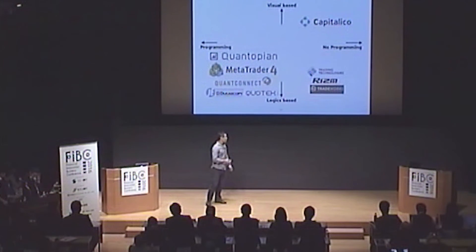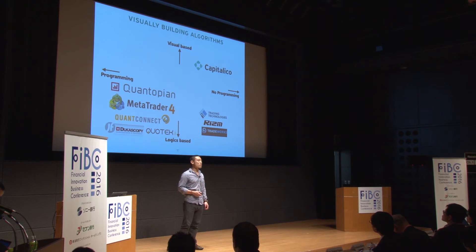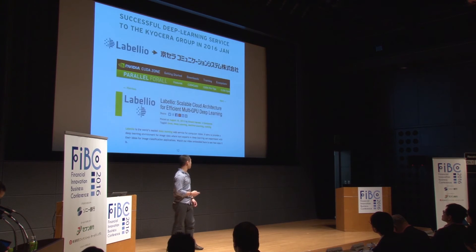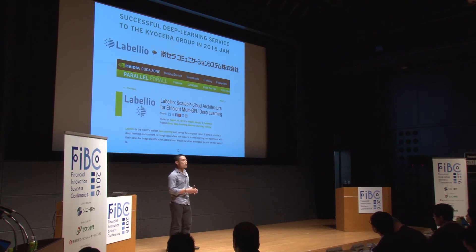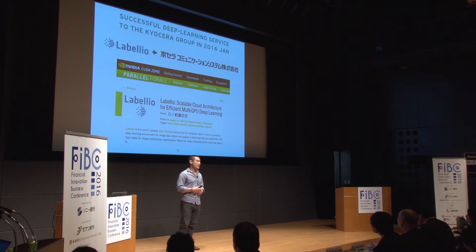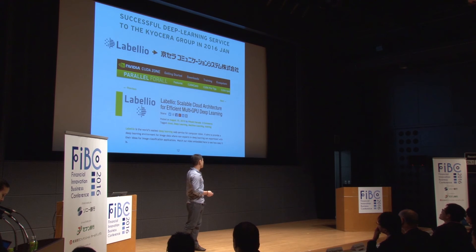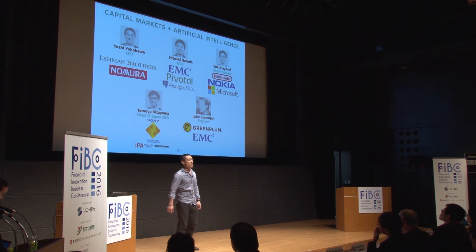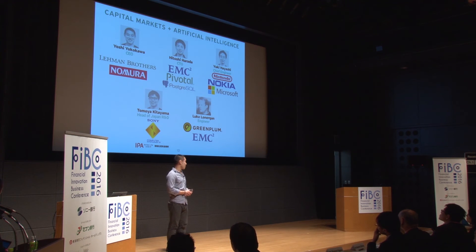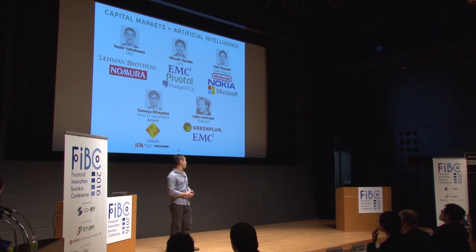Why are we the only ones who can do this? Our secret sauce is definitely the technology. We started out as a deep learning company and successfully built a deep learning web service that we exited to the Coursera group at the beginning of this year. Our team of eight is very powerful — only I have a finance background; the others are big data and AI professionals. Especially Luke Lonergan, founder and CTO of GreenPlum, which was bought out by EMC, is part of our team.